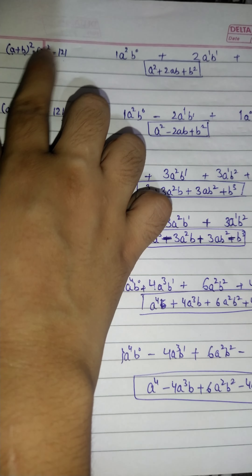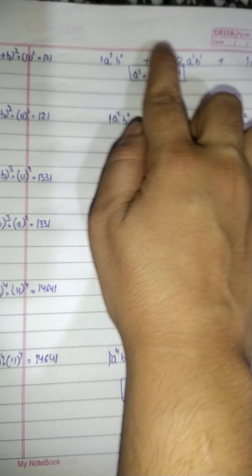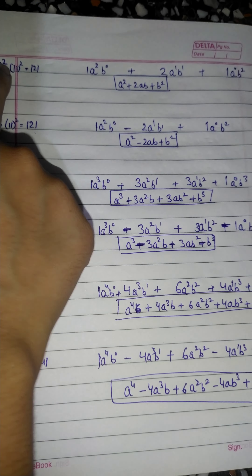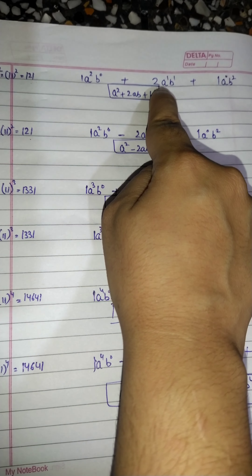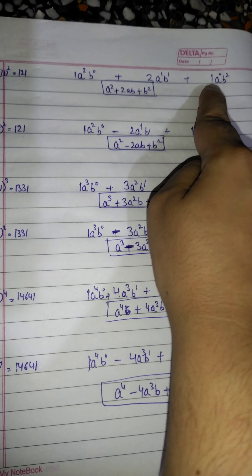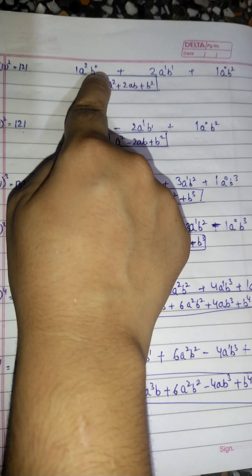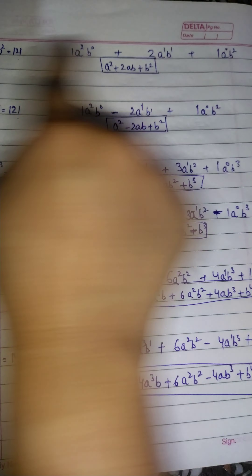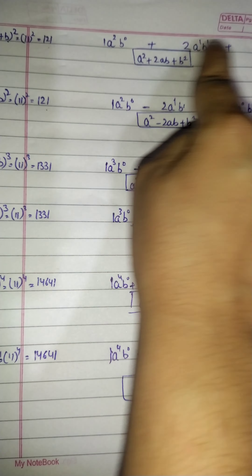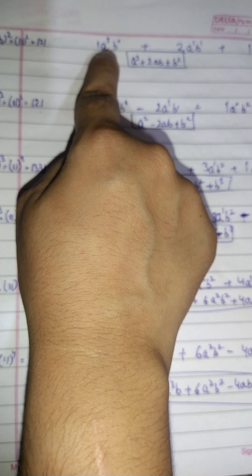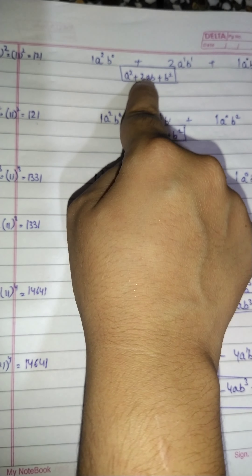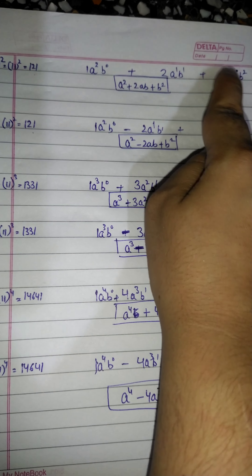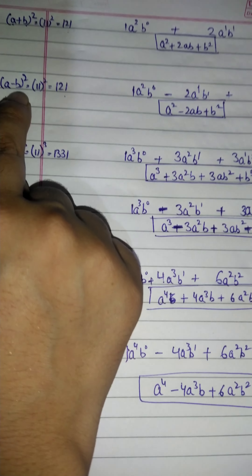11 squared is 121, so we write the coefficients 1, 2, 1. We start from a with the highest power: a², then a¹, then a⁰. Correspondingly, b increases: b⁰, b¹, b². Since the sign is positive, all terms are positive. Any variable to the power 0 equals 1, so we get: a² + 2ab + b².